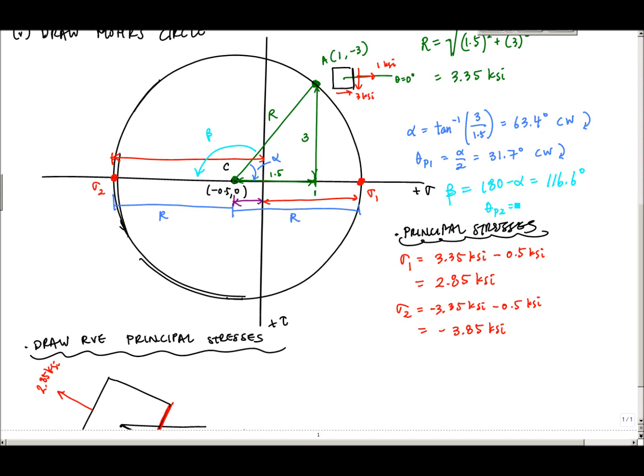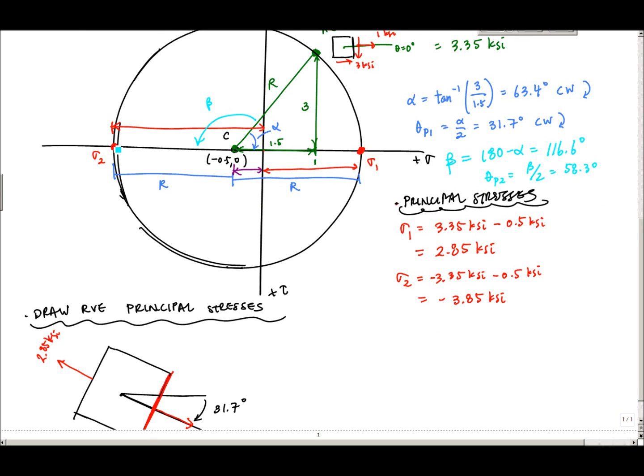Beta P2 is, in real life, divided by 2 is just beta divided by 2, which is 58.3 degrees. That means that to get to this face right here, I would have to go from the horizontal 58.3 degrees. 58.3 plus 31.7 is 90.